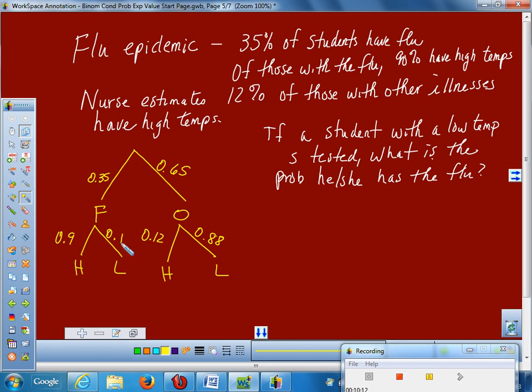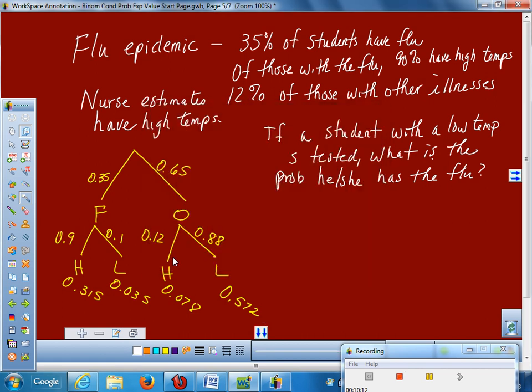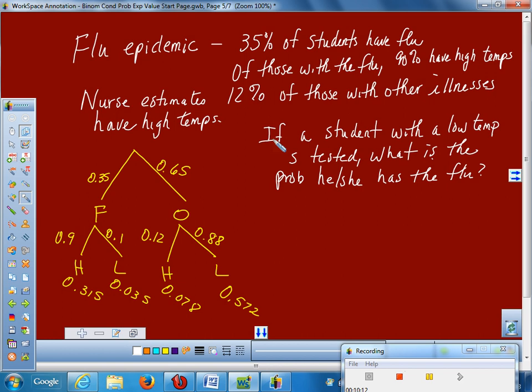What's the smart thing to do before you ever start working a problem? Multiply down. Multiply down your branches. So now, here's my question. If a student with a low temp is tested, what's the probability she has flu? First of all, is this a conditional statement or is this just a normal probability question? What's the big giveaway that it's often conditional? If. If, that's like screaming at ya. I'm conditional.